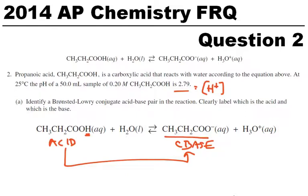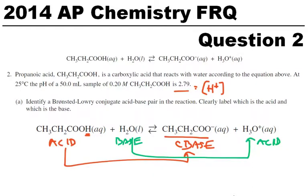We could also do the second pair. In this case, water would be our base, because water gains — accepts an H-plus to become H3O-plus, or H3O-plus donates to become H2O. One problem students had is they just said acid, conjugate base, conjugate acid, base, and didn't link the two, so they didn't get points. It's only asking for one conjugate acid-base pair, so either pair would be fine.